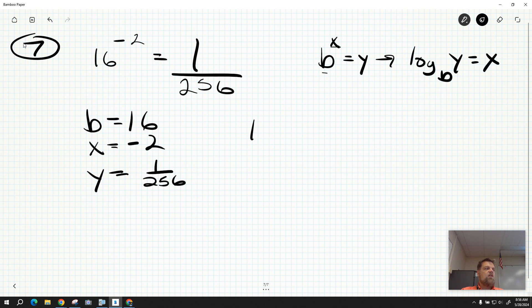Now to write this as a log, we're just going to say log base B of Y equals X. So log base 16, because that's what B is, of 1 over 256 equals the X value, which is negative 2.